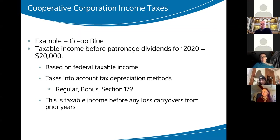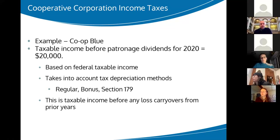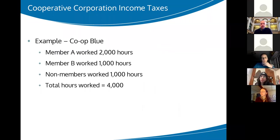The default treatment of patronage is based on federal taxable income, which takes into account tax depreciation. This is the taxable income before any loss carryovers — so if you had a loss from a prior year carrying into your current year, you can do your patronage before applying that loss, which some co-ops like to do and some don't. That's where a little bit of tax planning comes in handy to understand the situation of your particular co-op.